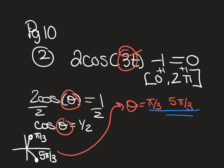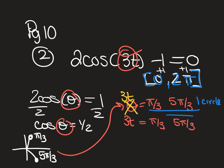Those are the answers for one circle (0 to 2π). However, we had a 3t, not a theta. Before dividing by 3, we need to think about what that 3 does logically — it's going to shrink all the answers, which means there are more answers around the circle.